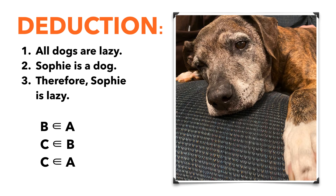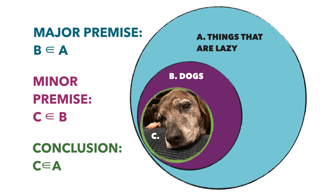Let's review the basics of deduction. It works kind of like math, and if you understand set theory, this will make 100% sense. For a deductive argument to work, it needs three parts: a large and smaller assumption known as premises, and a logical conclusion based on those two. Let's start with the premise: all dogs are lazy. Secondly, Sophie is a dog. Finally, we conclude that Sophie is lazy. Those symbols mean that dogs belong to the set called lazy, Sophie belongs to the set called dogs, and therefore Sophie also belongs to the set called lazy.